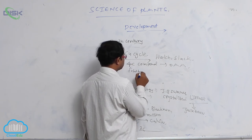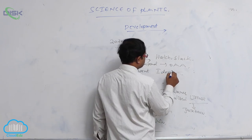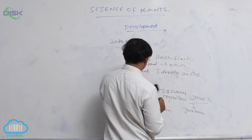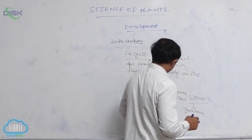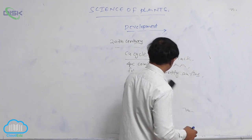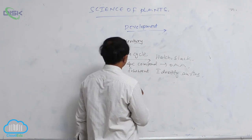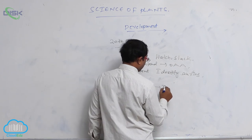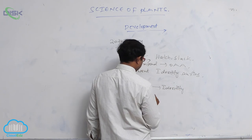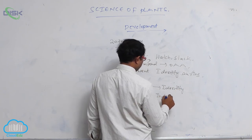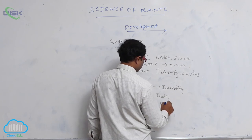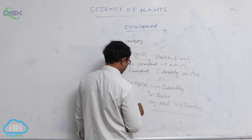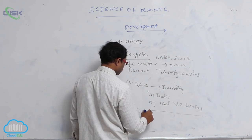F.W. Went identified auxins. Gibberellins and cytokinins are also identified at the time of the 20th century. Plant physiology is well developed at the 20th century. The C4 cycle was identified in India by Professor V.S. Ramadas, who extensively worked on C4 plants, belonging to S.V. University.